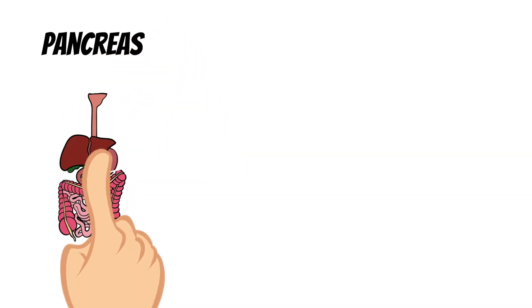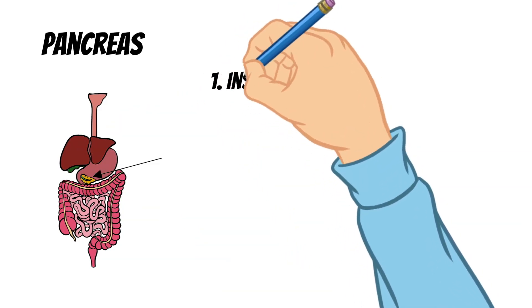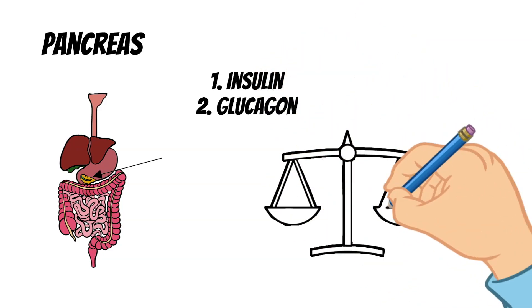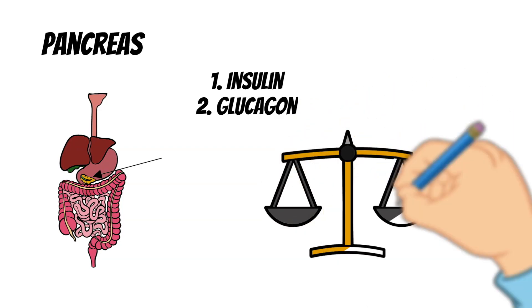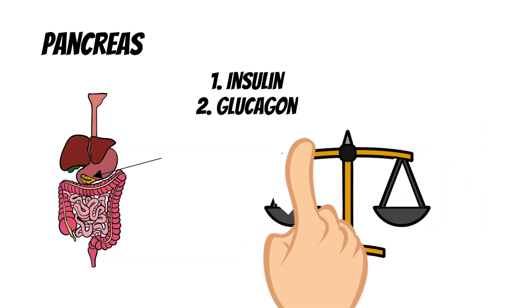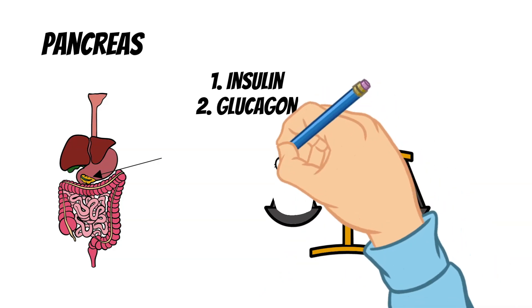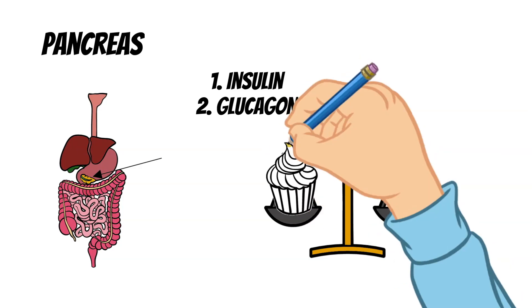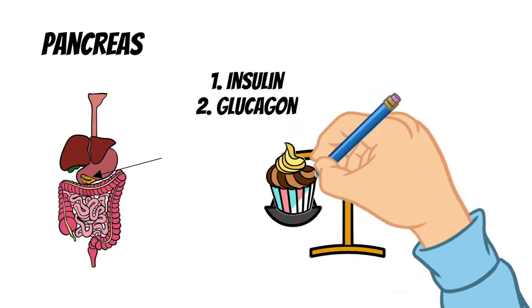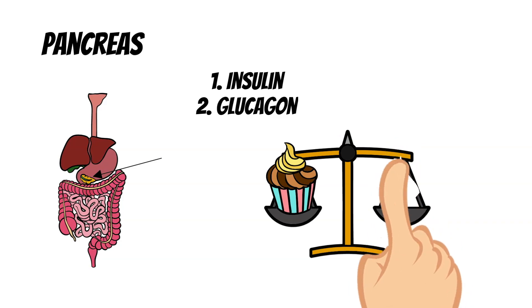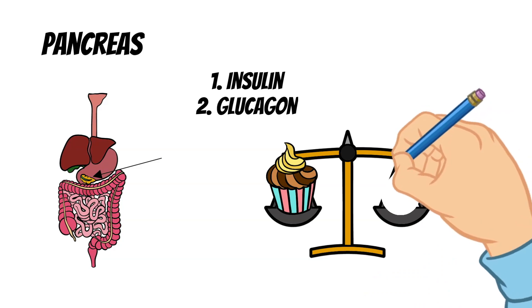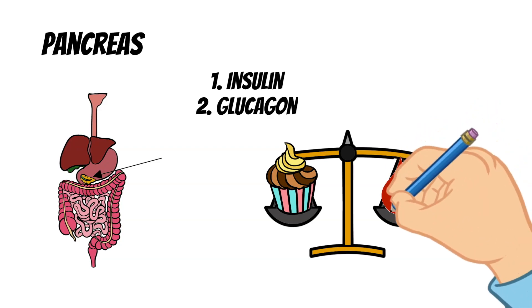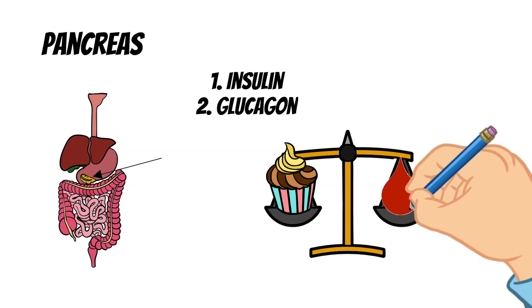The pancreas is located just behind your stomach. It produces two very important hormones — insulin and glucagon — which work together to keep the right amount of sugar in your blood. The pancreas is part of both the endocrine system, because it secretes hormones into the bloodstream, and the digestive system, because it makes and secretes enzymes into the digestive tract. If someone's pancreas does not produce enough insulin, their body has a hard time controlling blood sugar — this condition is called diabetes.